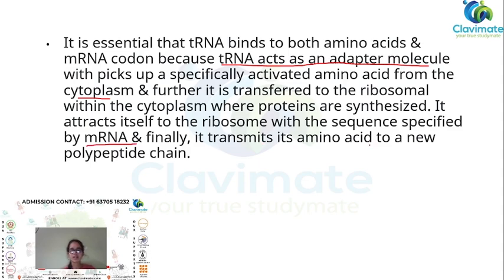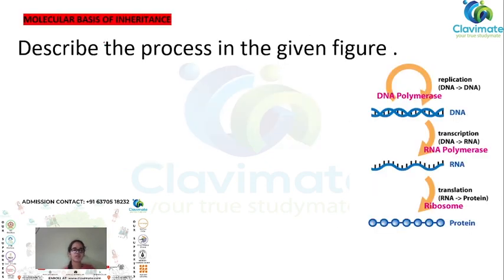The tRNA accepts particular amino acids and transfers them to the ribosome where proteins are synthesized. Finally, it transmits its amino acid to a new polypeptide chain. So tRNA picks up the specific amino acid, transfers it to the ribosome, and ultimately transports it to a new polypeptide chain.